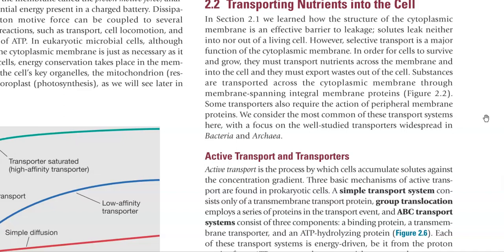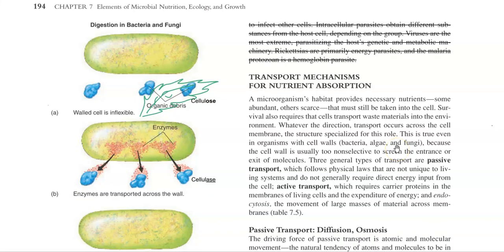Transport across the cytoplasmic membrane is affected through various membrane-spanning integral membrane proteins that are embedded in the cell membrane. The transport across the cell membrane can be achieved only for certain small molecules, whereas highly complex and polymeric substances are also encountered in the environment where bacteria or fungi are growing.